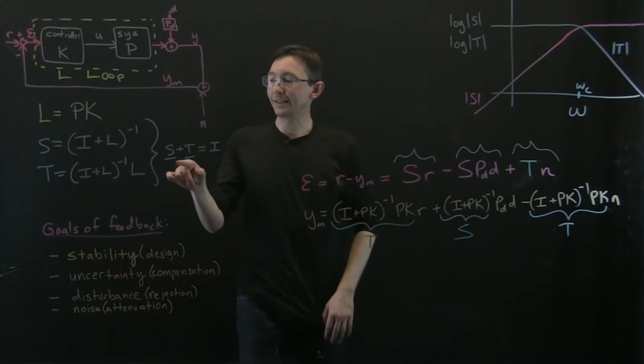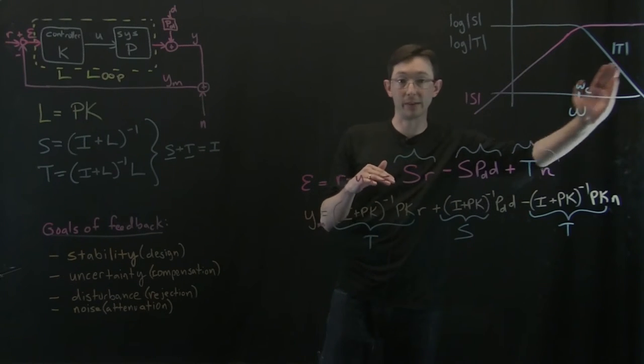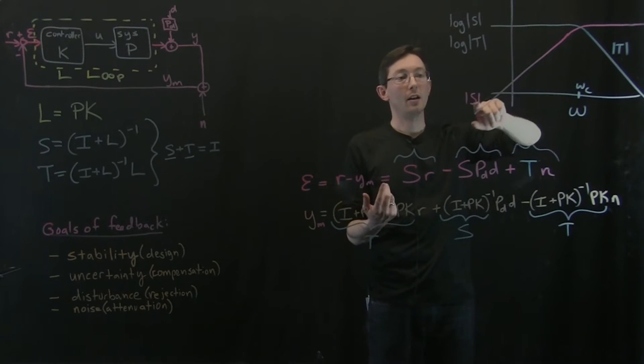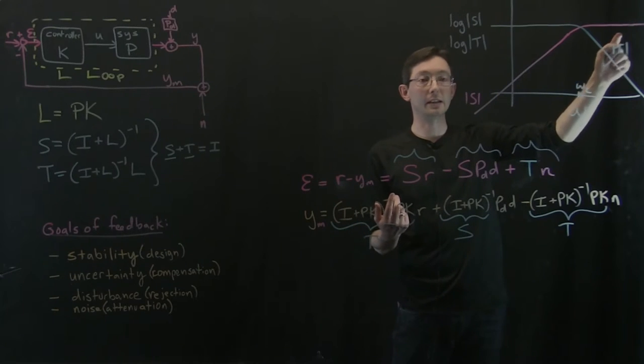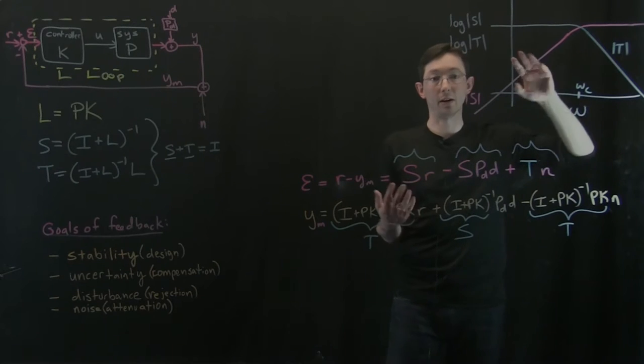We also know that S plus T has to equal 1, the identity matrix, at every frequency omega. And so that gives us some trade-off where if S is low, then T has to be close to 1. If T is low, then S has to be close to 1. And there's this crossover point where they start to trade off.